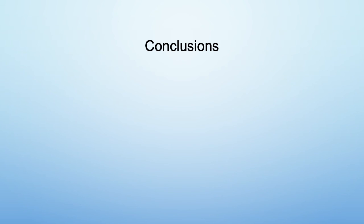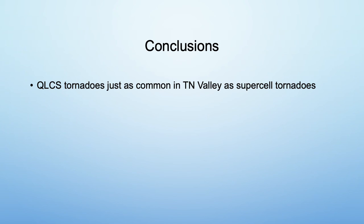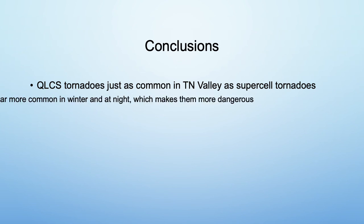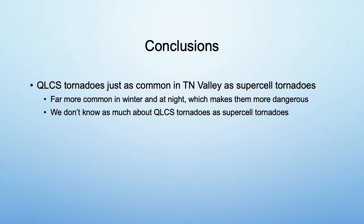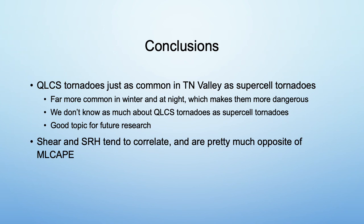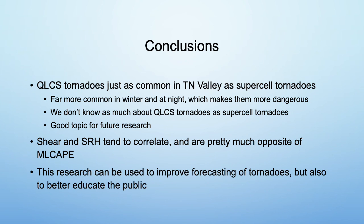Here are some things I've concluded from this research. QLCS tornadoes are just as common in the Tennessee Valley as supercell tornadoes. They are far more common in the winter and at night, which makes them more dangerous. In general, we don't know as much about QLCS tornadoes as we do about supercell tornadoes, so it would be a good topic for future research. Shear and SRH tend to correlate and are pretty much opposite of ML CAPE. This research can be used to improve forecasting of tornadoes, but also to better educate the public that tornadoes are possible at any time.